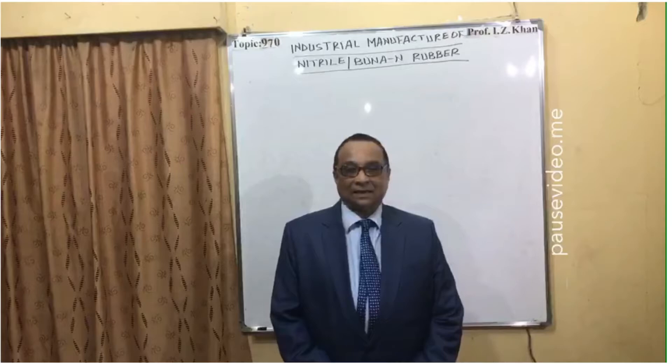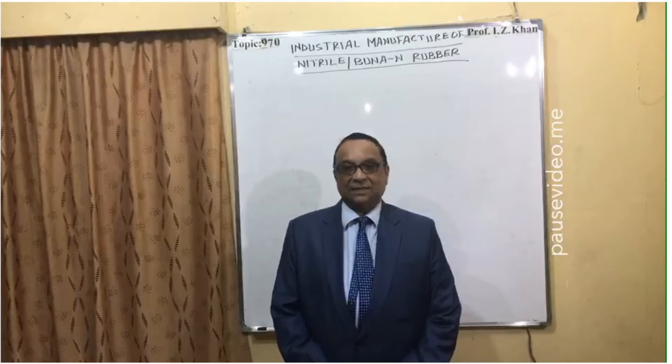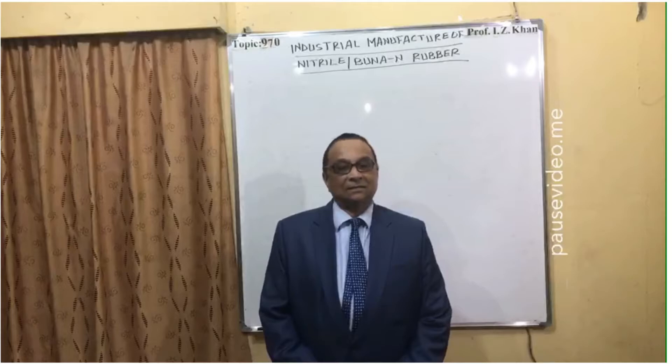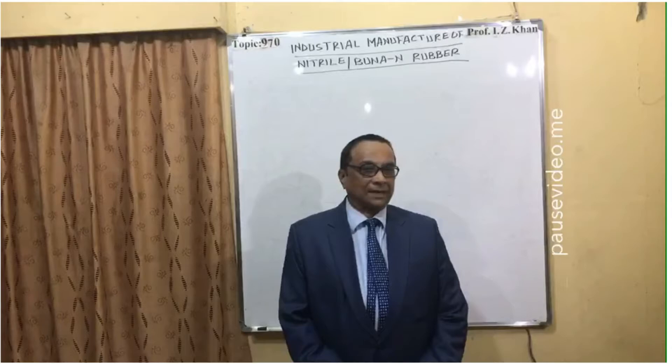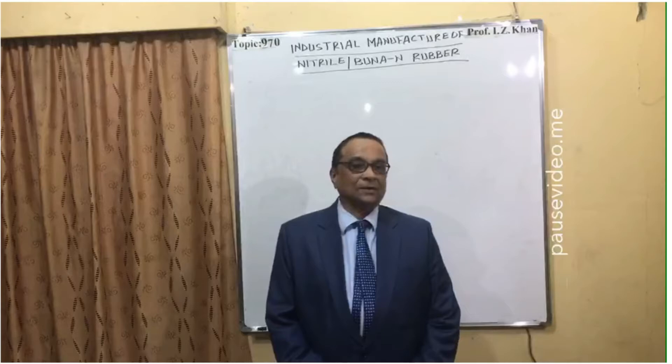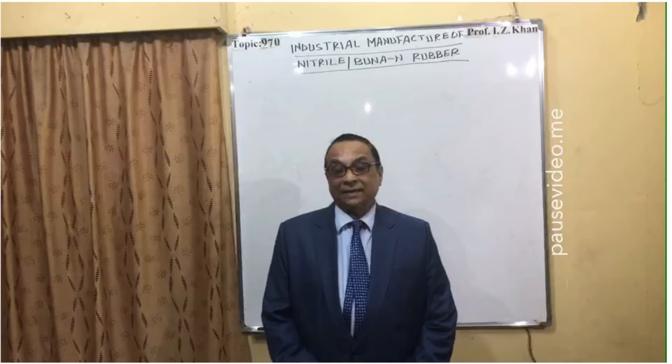Nitrile rubber, or Buna N, is highly resistant to heat, sunlight, and atmospheric oxidation. It is strong, but its tensile strength is relatively low because it contains butadiene, which forms an irregular and branched chain structure. Because of this, the tensile strength is low.